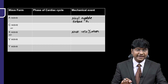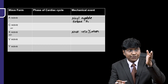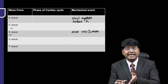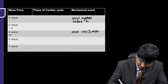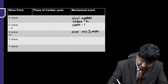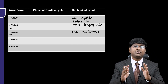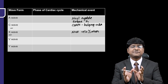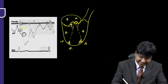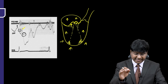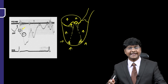The C wave appears during the X wave descent. The C wave tells you that the tricuspid valve cusps are bulging into the right atrium. So C wave is due to bulging of the tricuspid valve cusps into the right atrium, and this C wave is present on the descent of the X wave.